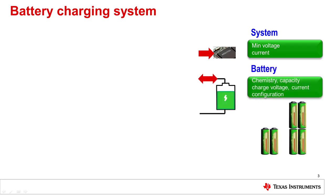The system power requirements dictate the voltage and current needed to run the application. With that in mind, the battery charging configuration can be selected. For example, cells can be placed in parallel or series depending on the system load requirements. The battery chemistry selected is also extremely important, as it will dictate both the charging and discharging profile requirements for the battery.